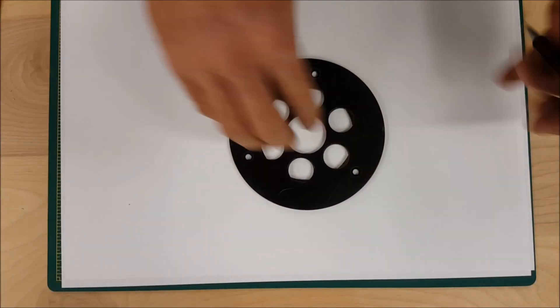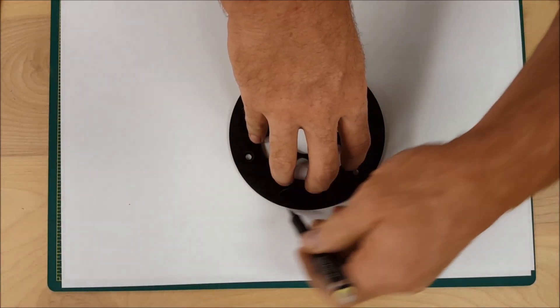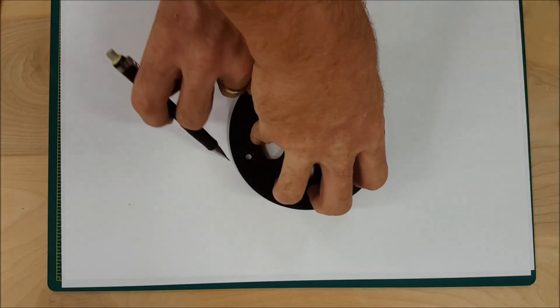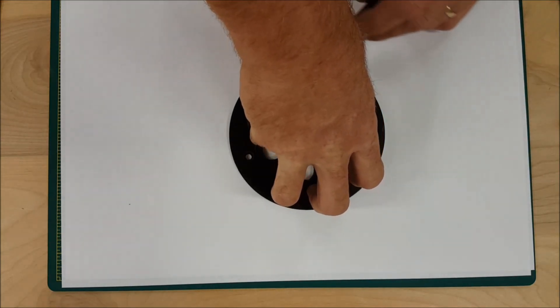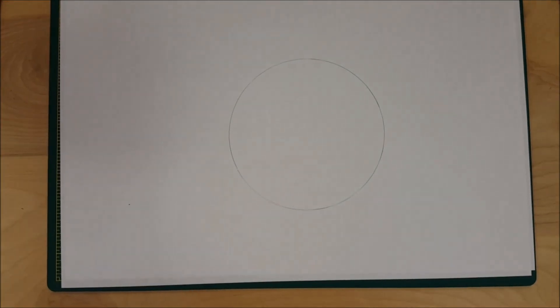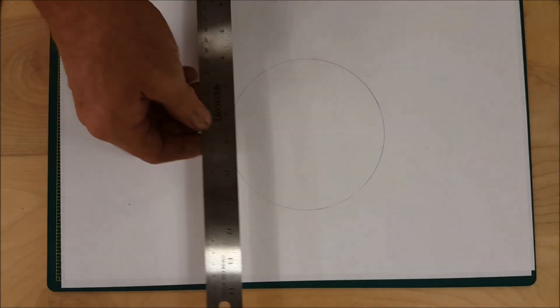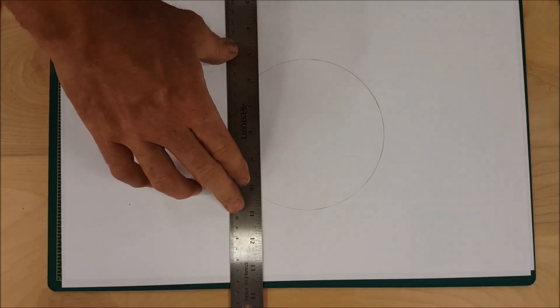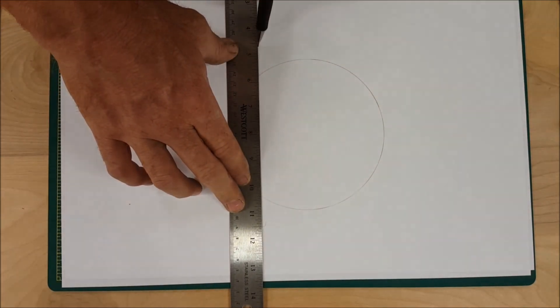So the first thing I'm going to do is trace the circle. The next step is to draw a line with a straight edge anywhere through the circle.